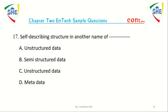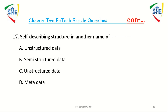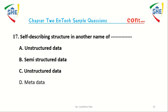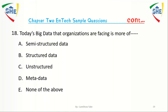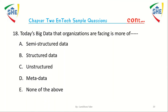Question number 17: Self-describing structure is another name of dash, or self-describing data is another name of dash. A) Unstructured data, B) Semi-structured data, C) Unstructured data, D) Metadata.